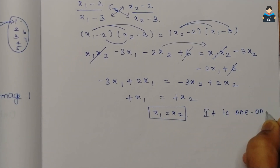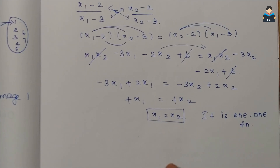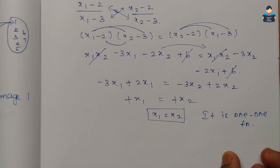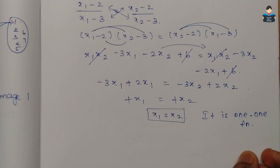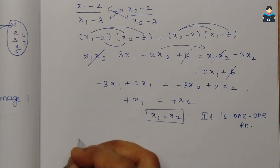So x₁ = x₂, therefore f is a one-to-one function. Now let's check the onto function.